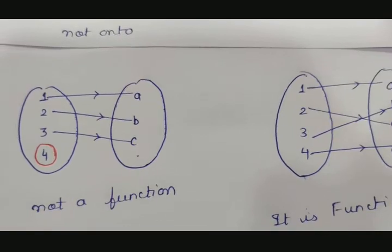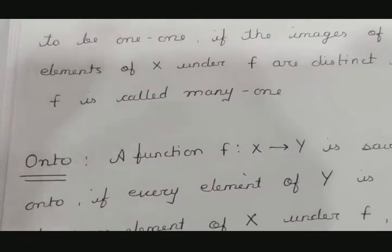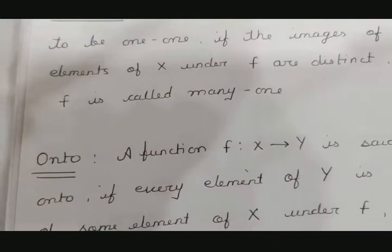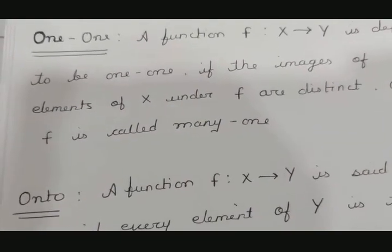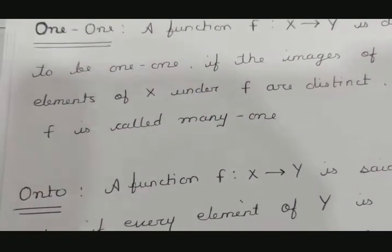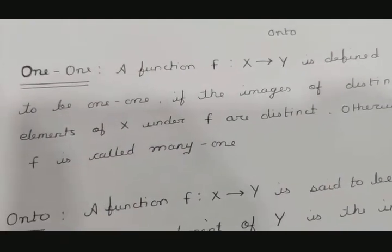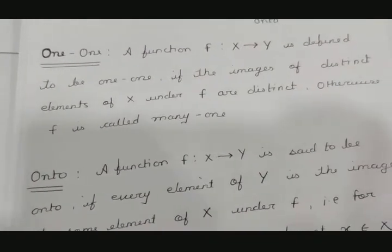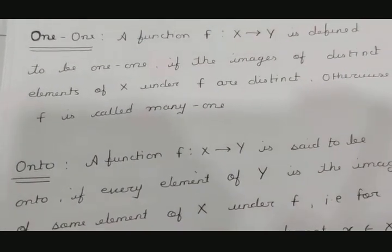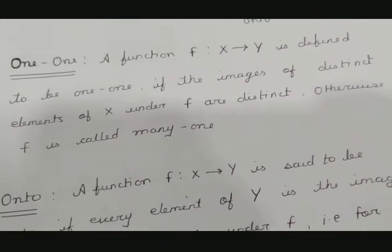Function definition is now clear. Now we go to inverse. We had three terms: inverse, trigonometry, and function. For inverse, we first need to clarify two terms: one-one and onto, which we studied in Chapter 1. The definition of one-one: a function f: x → y is defined to be one-one if the images of distinct elements of x under f are distinct.